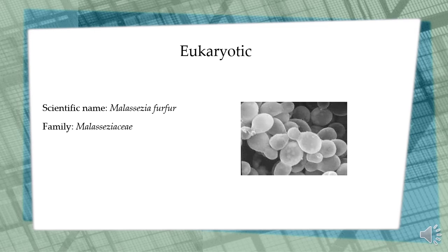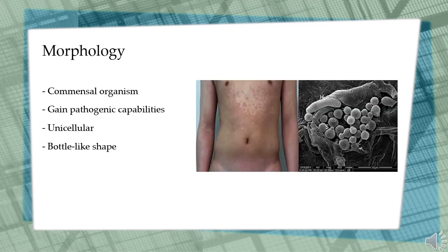The scientific name is Malassezia furfur and it belongs to the family Malassezia. Malassezia furfur is a fungus that lives on the superficial layers of the skin. It generally exists as a common unicellular organism, forming a natural part of the human skin microbiota, but it can gain pathogenic capabilities when it morphs from a yeast to a hyphal form during its life cycle through molecular changes.